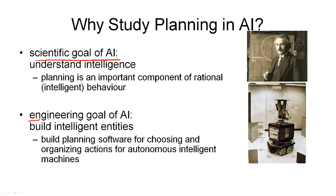The other goal of AI is the engineering goal, which is to build intelligent entities — robots or other entities that exhibit intelligent behavior. If this is to be intelligent, it needs to involve actions that are carefully chosen and organized, as we do in planning. What we do in planning is build software models of how planning works, which we can build into our intelligent entities as components. So planning directly contributes to the engineering goal of AI as well. As a side remark, the robot you see here is the Shakey robot, built in the late 1960s, and it was one of the first robots that used an actual planner to come up with its actions.